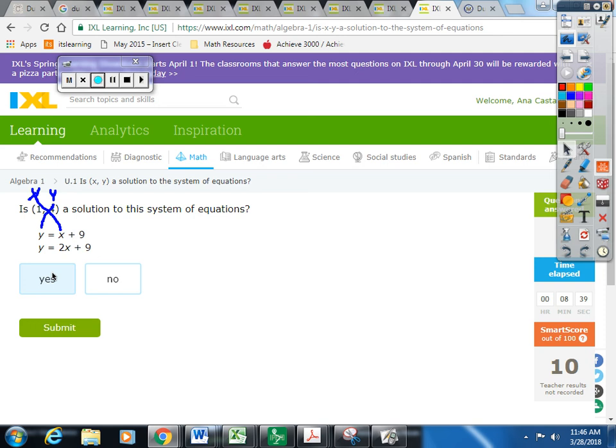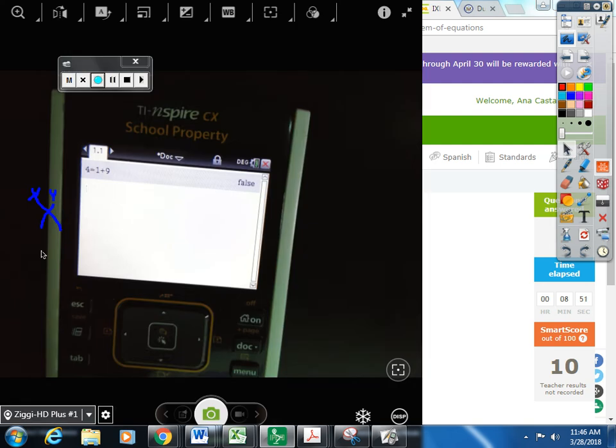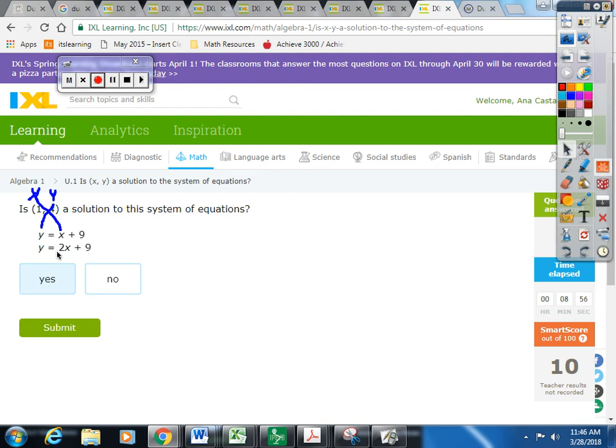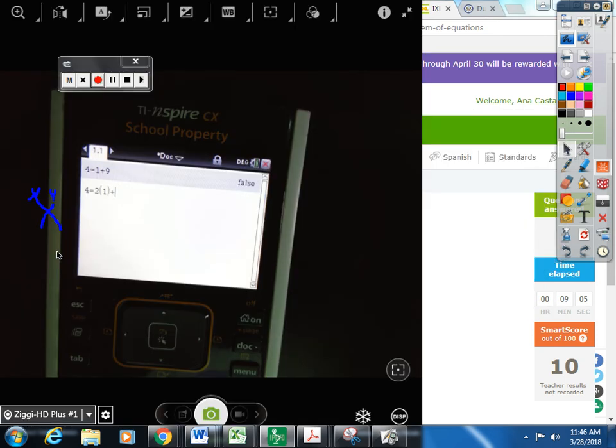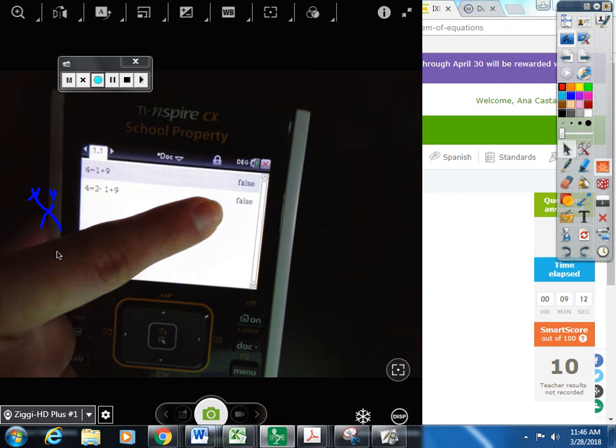As soon as you get false, it would be no, not a solution. To get yes solution, you have to put true. Your calculator has to give you true and true. So, two times. So, even if I did this one, look. I'm going to do this one just to show you this one. It starts with Y. Y is four equals two, two parentheses, the X, which is one. And then, plus nine. So, what'd I get? False.